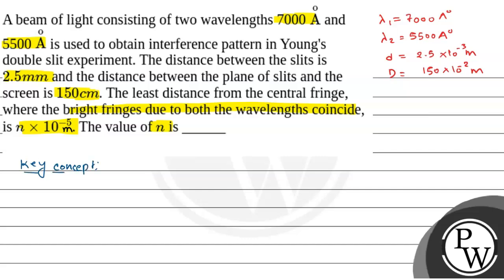The concept we need here is fringe width in Young's double slit experiment. The fringe width beta is equal to lambda times capital D divided by small d, where capital D is the distance between the slit and the screen, and small d is the slit separation.